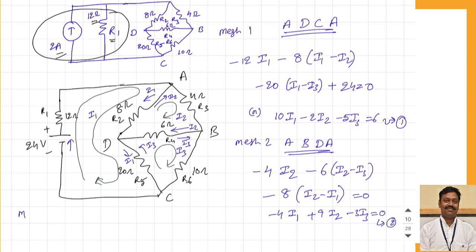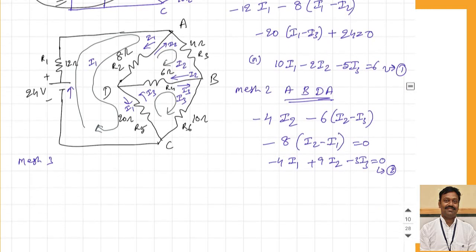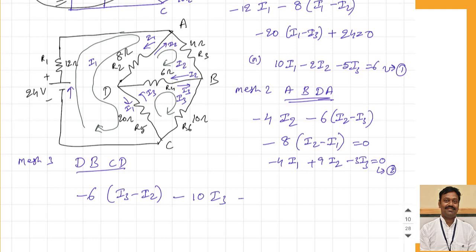Applying to mesh 3 (D, B, C, D): from D to B through the 6 ohm resistance, the current is I3 minus I2. Through the 10 ohm resistance, current I3 gives 10 times I3. Through the 20 ohm resistance, currents I3 and I1 give 20 times (I3 minus I1). Equating to zero and simplifying: minus 10 times I1 minus 3 times I2 plus 18 times I3 equals zero. This is equation number 3.